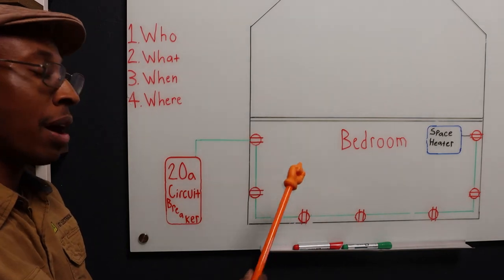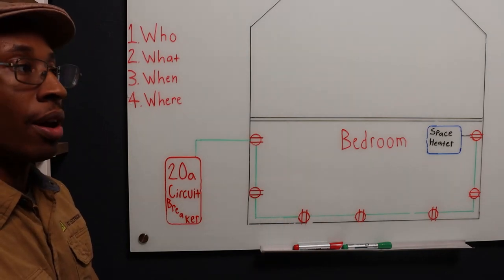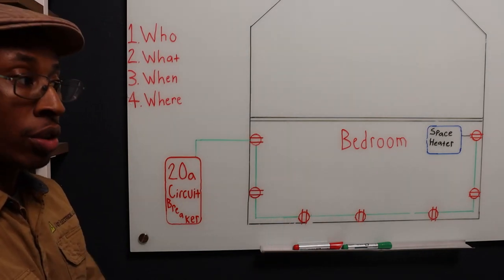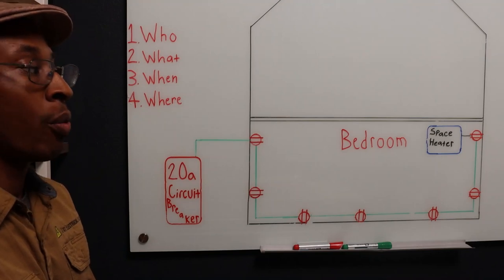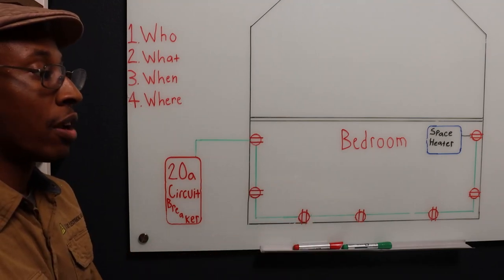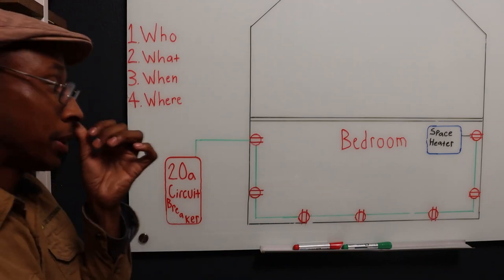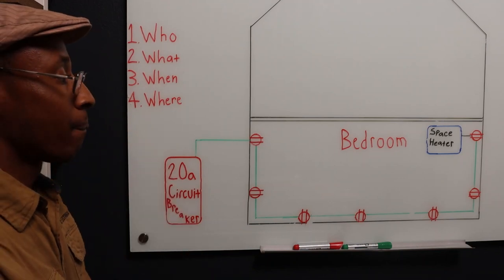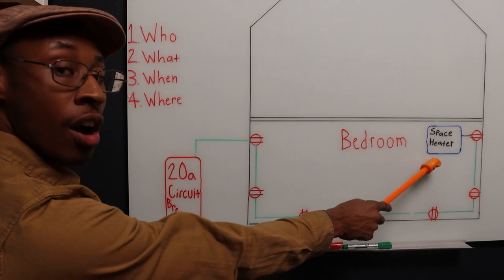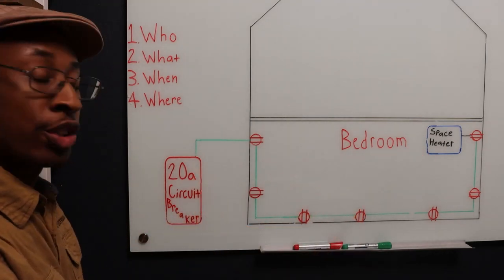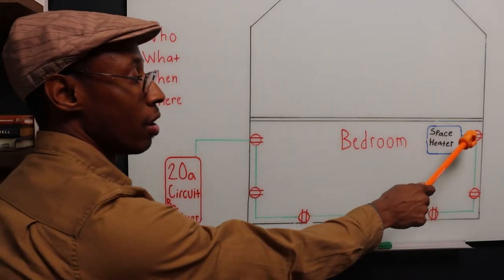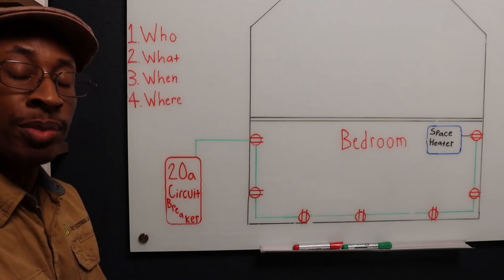'I plugged it in my bedroom next to my recliner. I was going to sit back and watch some TV, and when I plugged it in, that's when the breaker tripped.' Okay Miss Mary. So now, did the space heater cause the circuit breaker to trip, or did the outlet cause the space heater to trip?